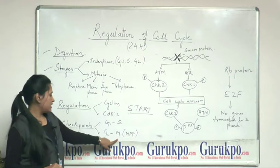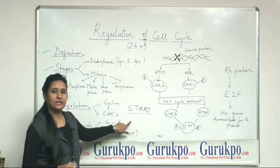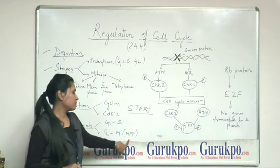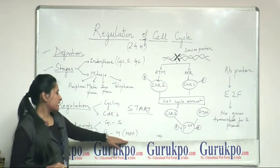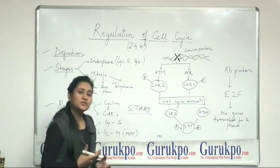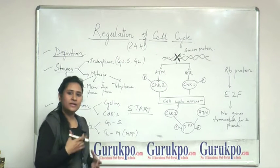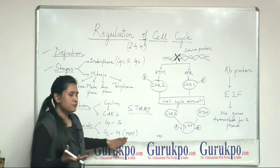Another checkpoint is G2 to M-phase, where a very important factor comes, which is called maturation promoting factor. And this factor is present in the oocyte of mammalian cells. And also, it was found that the cytoplasm of those cells which have already entered into the M-phase...